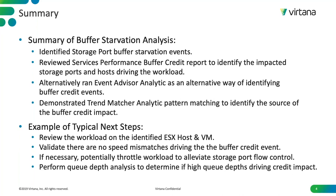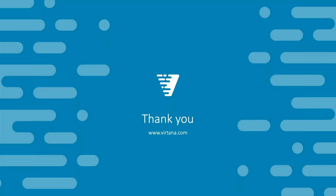Example of typical next steps would be as follows: Review the workload on the identified ESX host or VM that is causing the flow control. Validate there are no speed mismatches driving the buffer credit event — as you will remember, we identified a 16 gig host talking to eight gig storage ports in this video. If necessary, potentially throttle workload to alleviate storage port flow control. You can alternatively perform a queue depth analysis to determine if high queue depths are driving buffer credit impact. This concludes the video on buffer starvation analysis. Thank you.